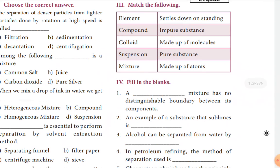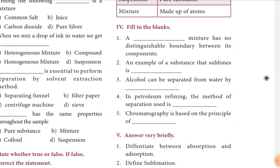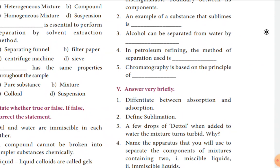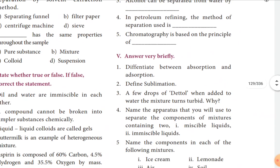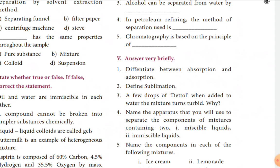Fill in the blanks: A homogeneous mixture has no distinguishable boundary between its components. An example of a substance that sublimes is ammonium chloride, camphor, and naphthalene. Alcohol can be separated from water by fractional distillation. In petroleum refining, the method of separation used is fractional distillation. Chromatography is based on the principle of different solubilities.